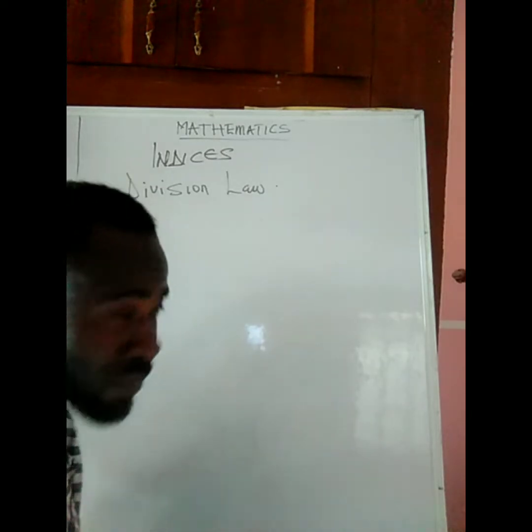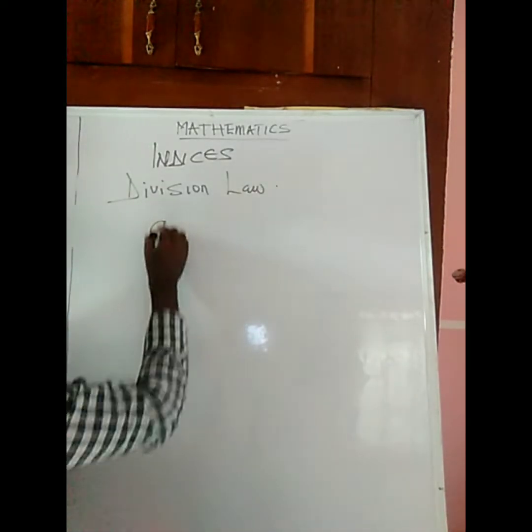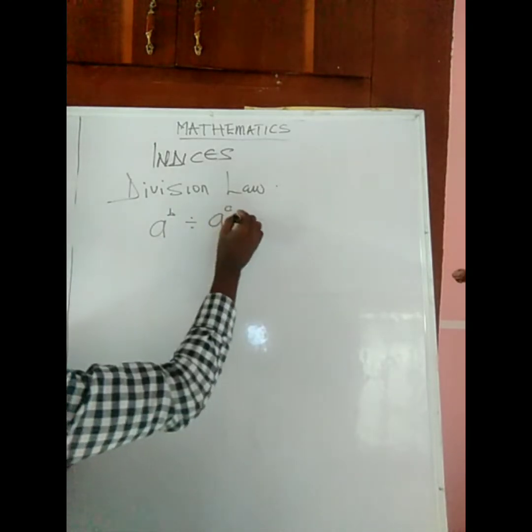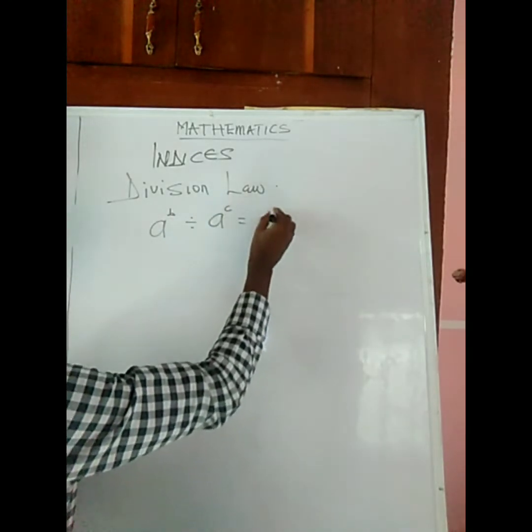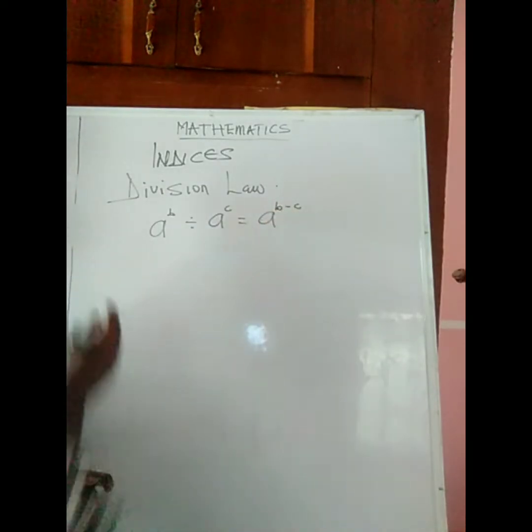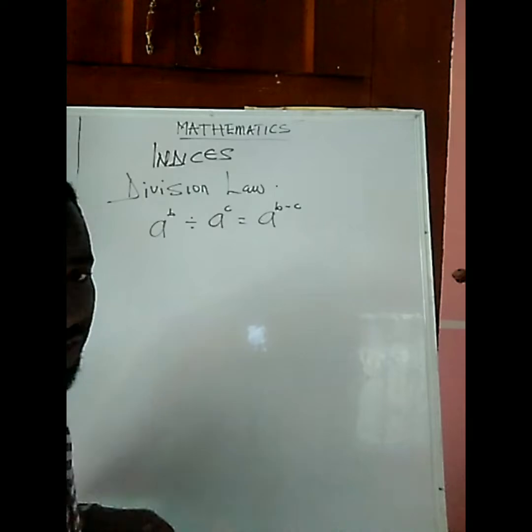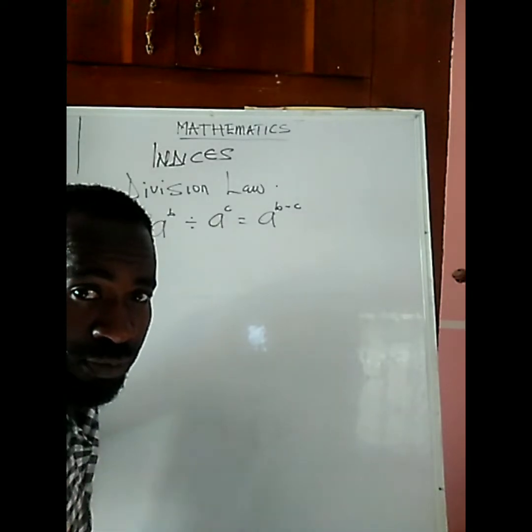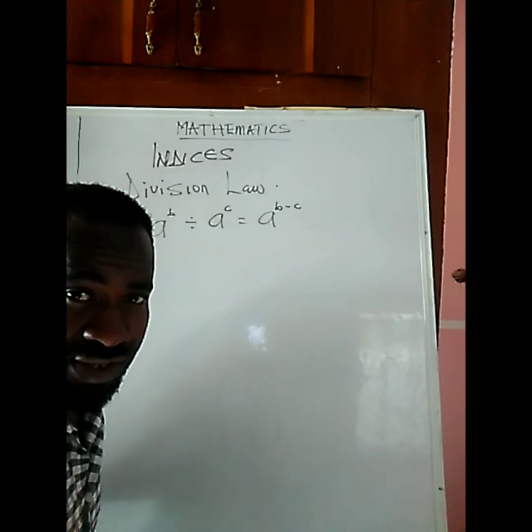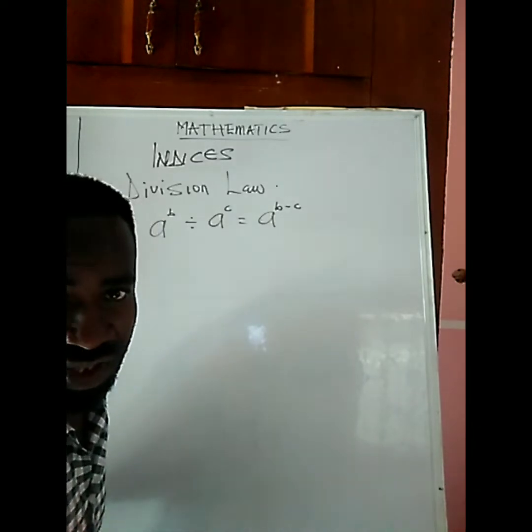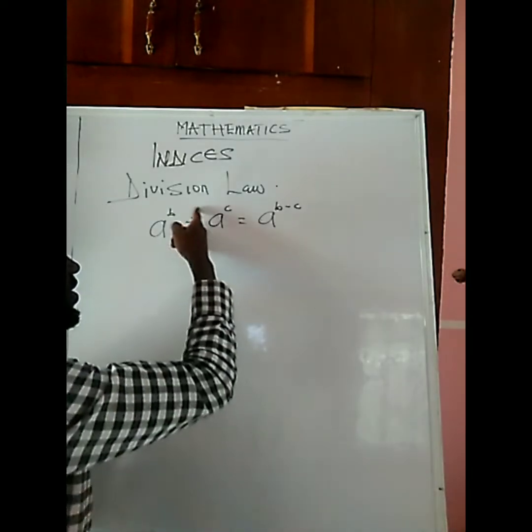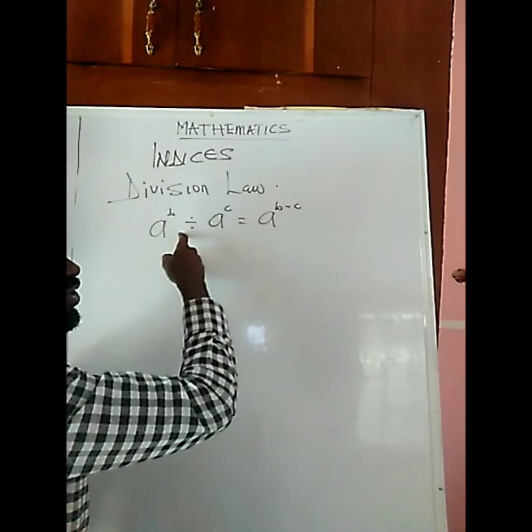What does this law say? It says a to the power of b divided by a to the power of c is equal to a to the power of b minus c. The order is very important. The difference between this division law and the multiplication law is this sign here for division and this sign here, negative.